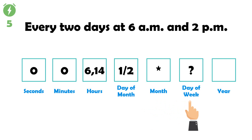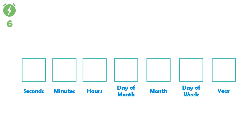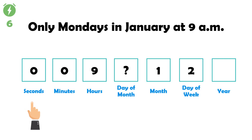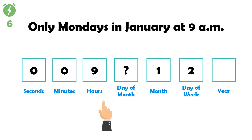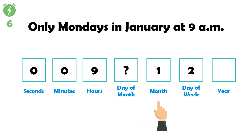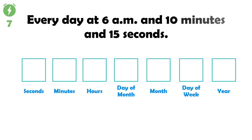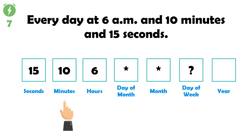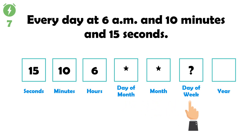Sixth example: only Mondays in January at 9 a.m. — '0 0 9 ? 1 2'. Zero in seconds, zero in minutes, nine in hours, question mark in day of month, one in month means January only, and two in day of week means Monday only. Seventh example: every day at 6:10:15 a.m. — '15 10 6 * * ?'. Fifteen in seconds, ten in minutes, six in hours, star in day of month, star in month, and question mark in day of week.